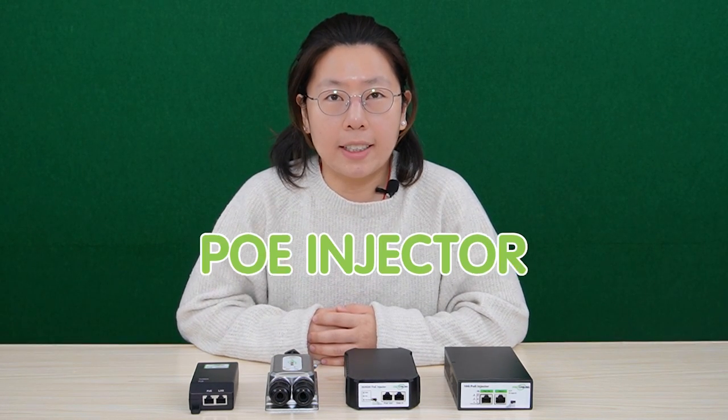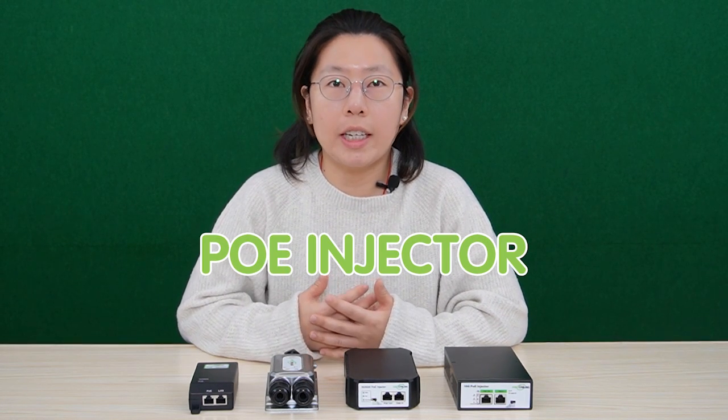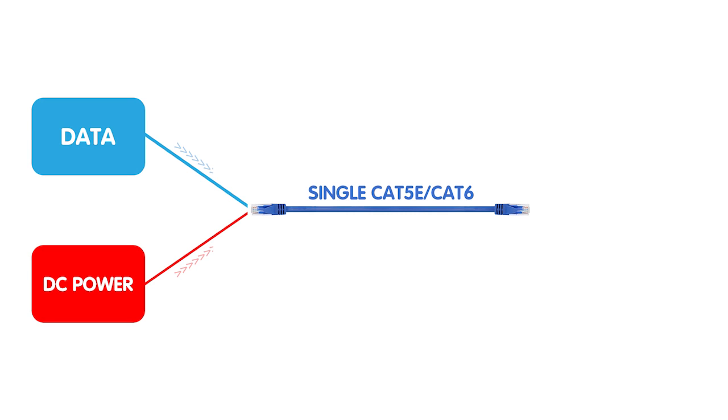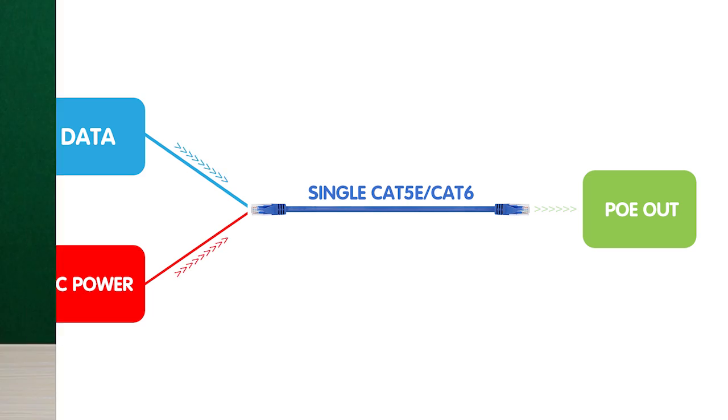The most common device is the PoE injector. Basically, a PoE injector is a power supply unit that can combine data from a network switch or router with DC power and send it over the UTP cable.